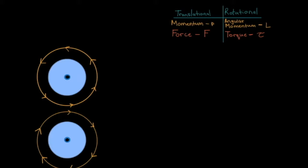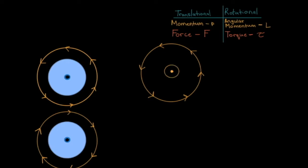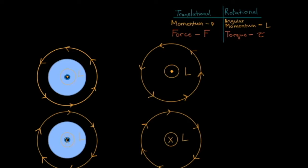For a side view of a spinning wheel: if the wheel is spinning counterclockwise, curl your fingers in that direction and your thumb will point towards you — meaning the angular momentum is coming towards you. We write this as a circle with a dot in the middle, visualized as an arrow coming towards you. If the wheel is spinning clockwise, your thumb points into the screen — the angular momentum is going away from you. We write this as a circle with an X in the middle.